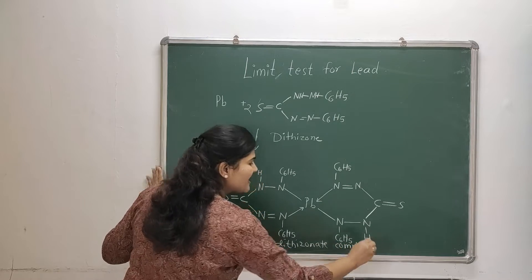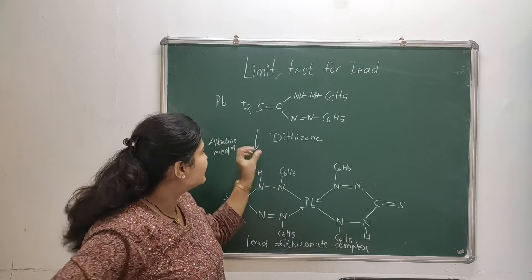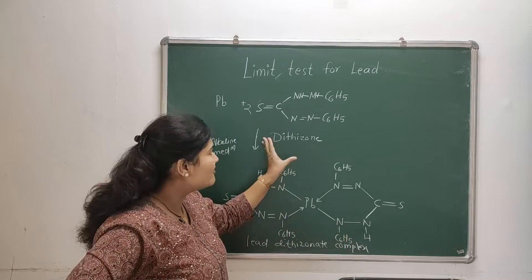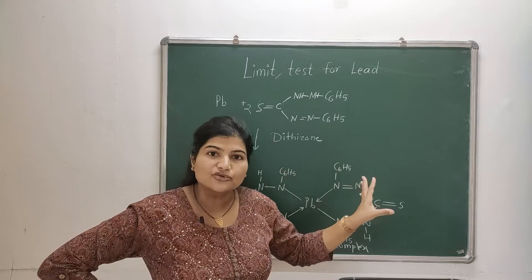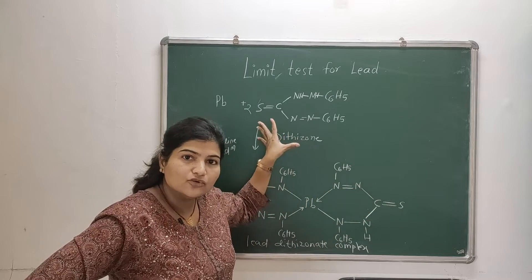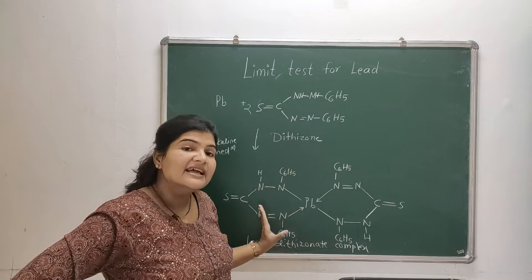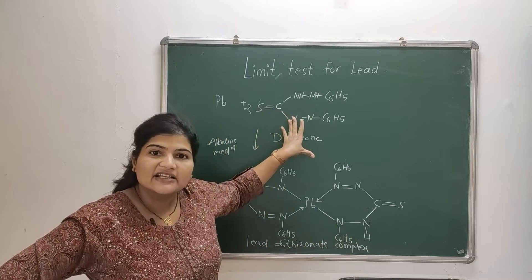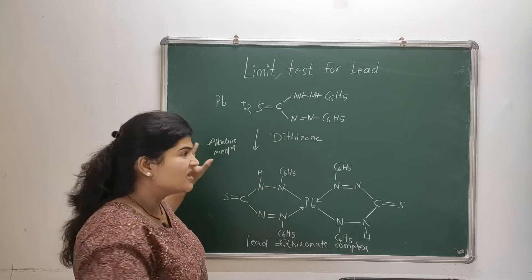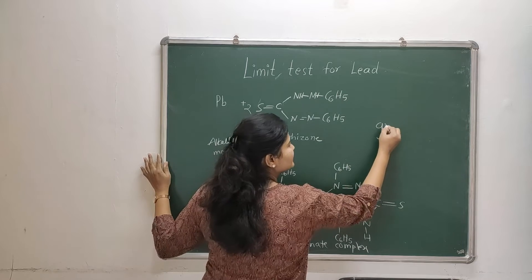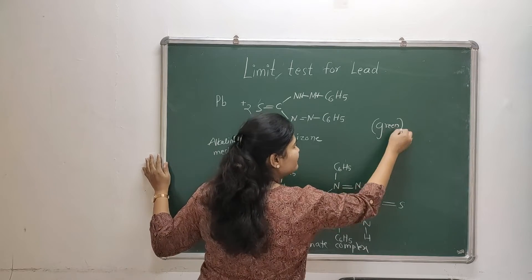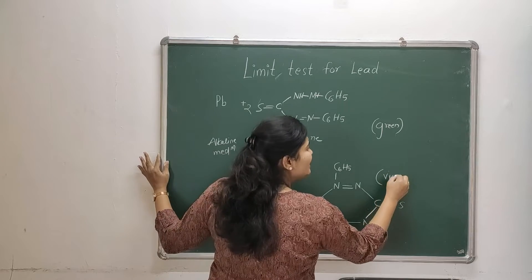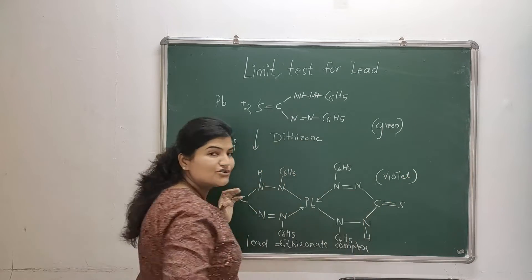Now what we have done - we have extracted the lead from our sample solution with the help of dithizone extraction solution, and once they react together they form this complex: lead dithizonate complex. Now the original dithizone solution in chloroform is green in color, and once it forms this lead dithizonate complex it becomes violet in color.